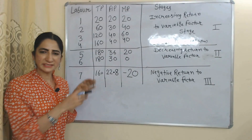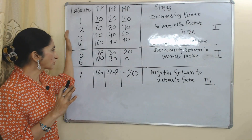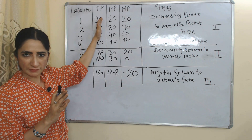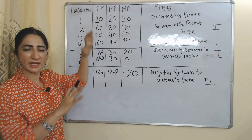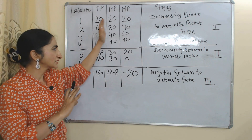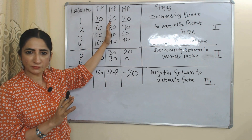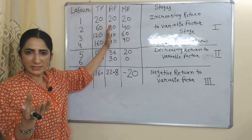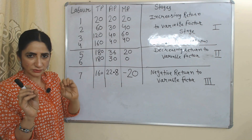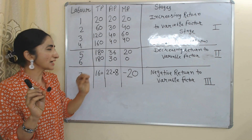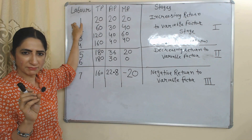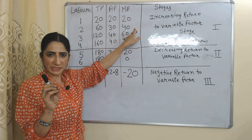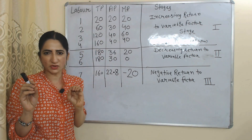Now we will see the table of this law. The first column has labor. The second column has total product of labor — the output produced by labor. The third column has average product of labor, meaning output produced per laborer, calculated by dividing total output by number of laborers. The last column has marginal product, which we have already discussed.